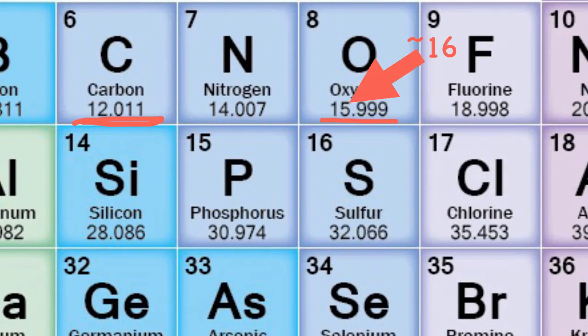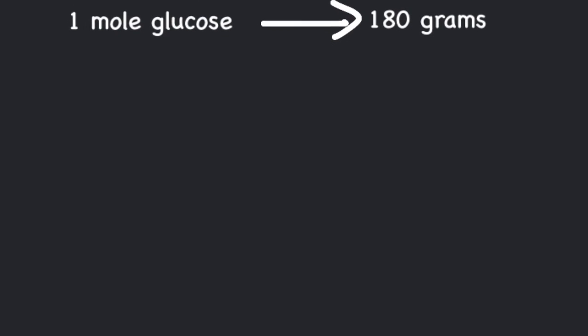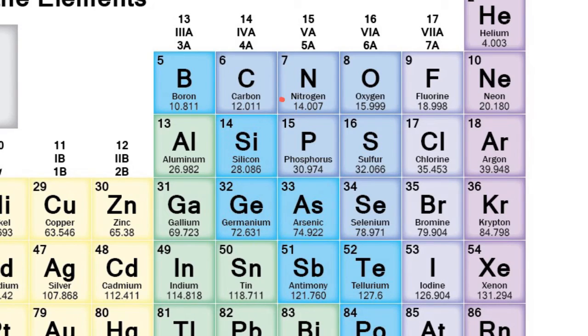What about glucose? Glucose is a compound with the formula C₆H₁₂O₆. We need to add the individual atomic masses of carbon, hydrogen, and oxygen. The atomic mass of carbon is 12; since there are 6 carbon atoms in glucose, we multiply 12 by 6.